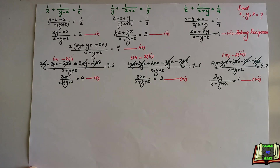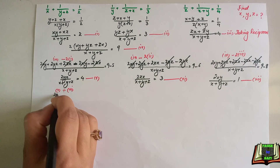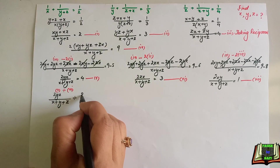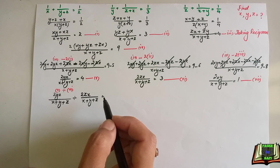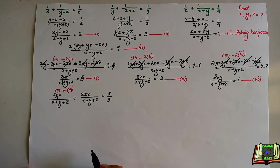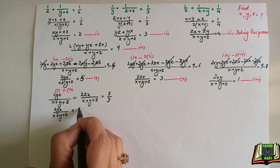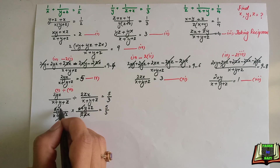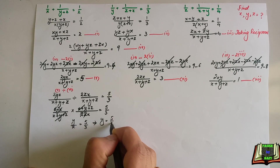In the next step we divide equation 5 by equation 6. We made a mistake earlier — it should be 9 minus 4 equals 5. So equation 5 divided by equation 6 gives: (2yz over x+y+z) divided by (2zx over x+y+z) equals 5 by 3. The common factors cancel, leaving y over x equals 5 by 3, so y equals 5x/3.